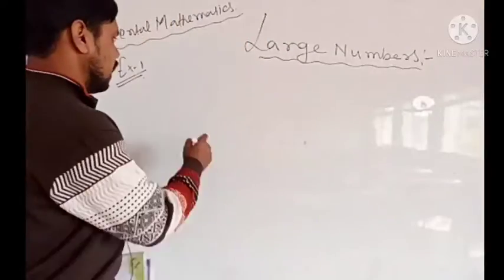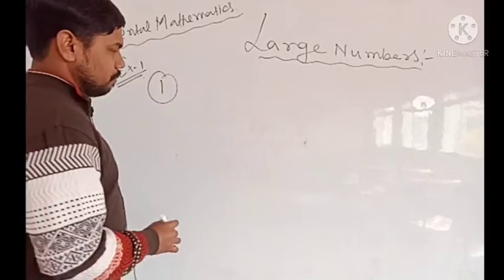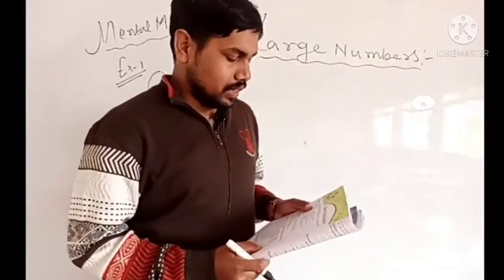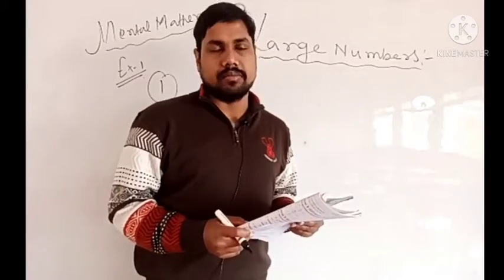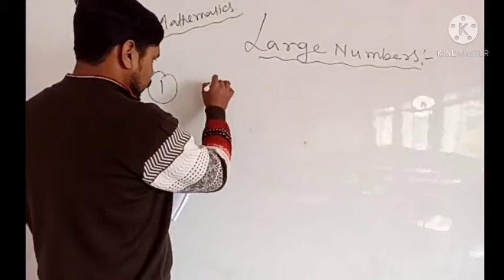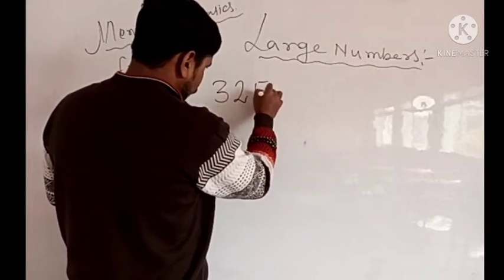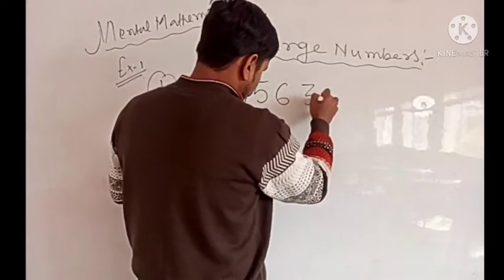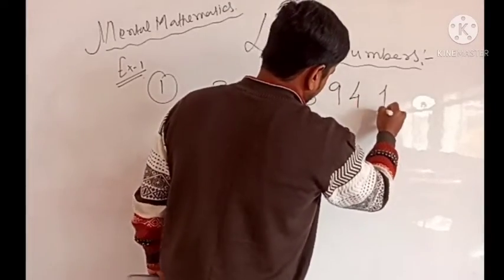The first question is related to fill in the blanks. Question number 1 is asking: the place value of 2 in this number, in the Indian system, is — so here is the number: 3, 2, 5, 6, 3, 9, 4, 1.